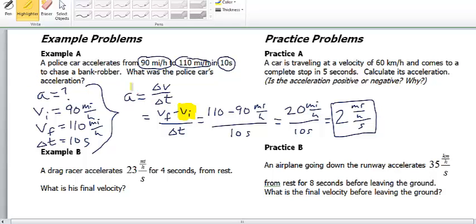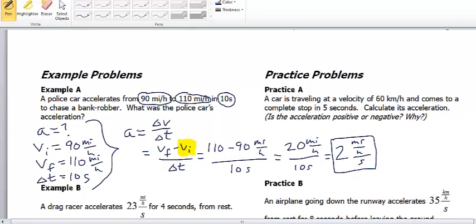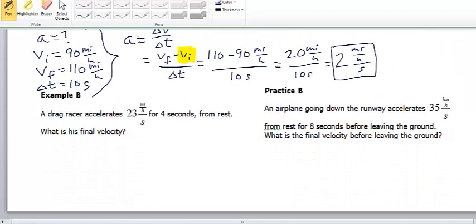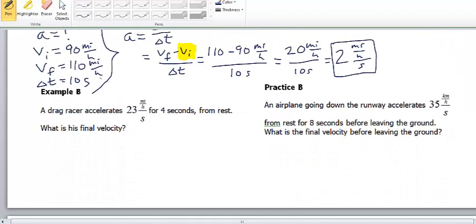Alright. So, let's take a look now at example B. I'm going to scroll down here. A drag racer accelerates 23 miles per hour per second for 4 seconds from rest. What is its final velocity?